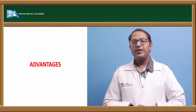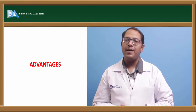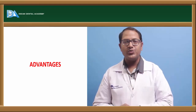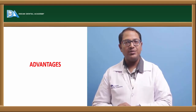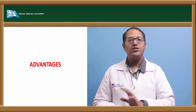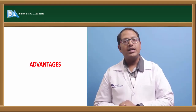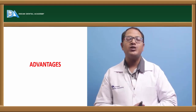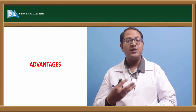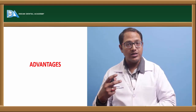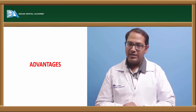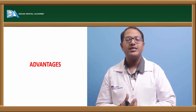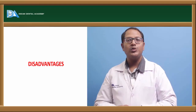Coming to the advantages of immediate dentures: the first and foremost advantage is the patient is happy because, though he does not have natural teeth, he has artificial teeth to replace them. Psychologically and socially, when meeting anyone, nobody recognizes the patient as edentulous. Preservation of the residual ridge also remains — studies have shown the residual ridge does not resorb as much when a denture is immediately placed. Proprioceptive response is maintained. And importantly, giving an immediate denture allows us to know what corrections to make in the final denture placement, benefiting both patient and dentist.